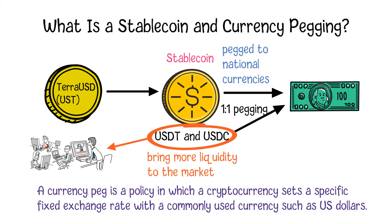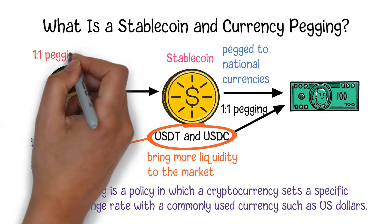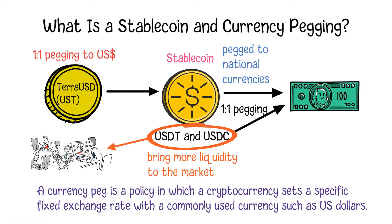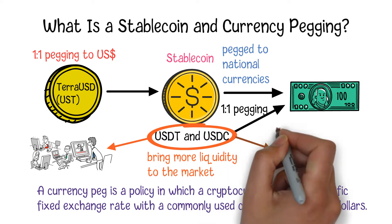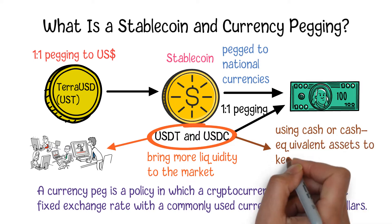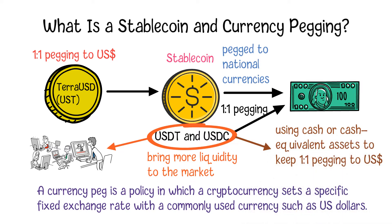TerraUSD, the third largest stablecoin, is developed by Terraform Labs and is also pegged to the US dollar. To maintain the peg with fiat currencies like US dollars, each stablecoin project has a different way to maintain the peg. For example, USDT and USDC use cash or cash-equivalent assets in their reserves to keep the 1 to 1 pegging, while some stablecoins like DAI are backed by ETH deposited into smart contracts.